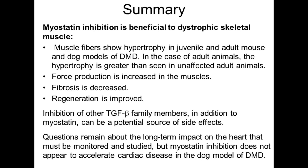Q: Have you observed anything in terms of respiratory muscles, smooth muscle, and the diaphragm? A: We saw benefit to the diaphragm — the diaphragm also had less fibrosis, improved muscle mass, and improved strength. So the diaphragm did benefit directly from myostatin inhibition. Myostatin doesn't signal in smooth muscle, so we didn't look at smooth muscle, and one wouldn't expect it to do anything directly to smooth muscle.